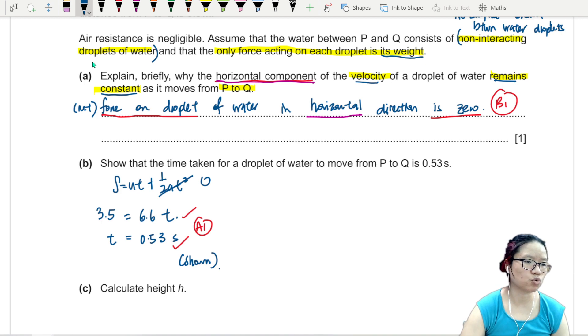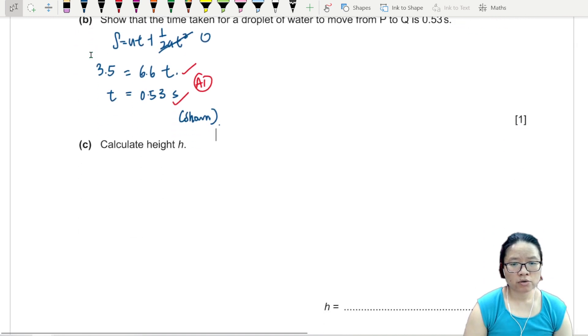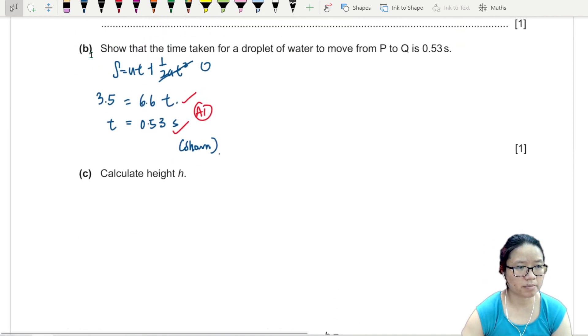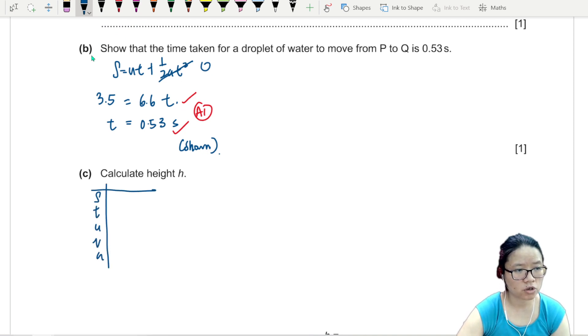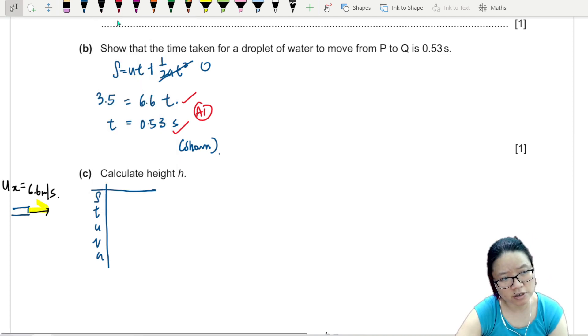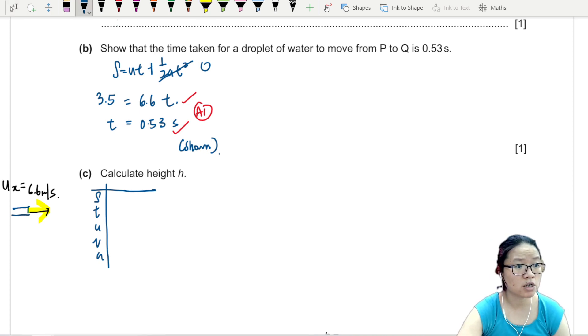Always leave your answer to 2 or more significant figures. Calculate the height h. To find height h, we're going to use SUVAT again. But now we're going to use SUVAT for the y component. Your object or the hose or the water droplet will leave the hose at 6.6 meter per second. This is Vx, or Ux. Is there any vertical component? It is fully and entirely horizontal.